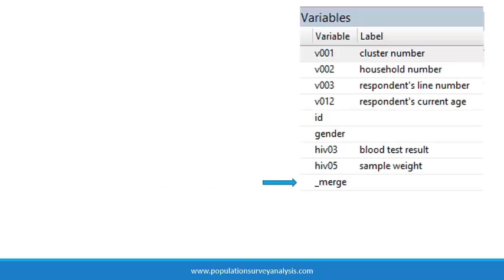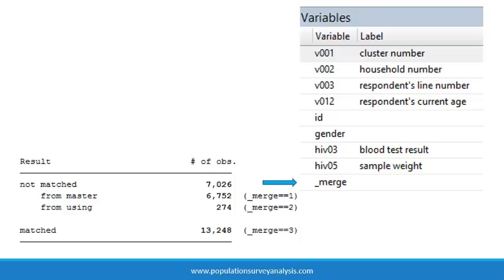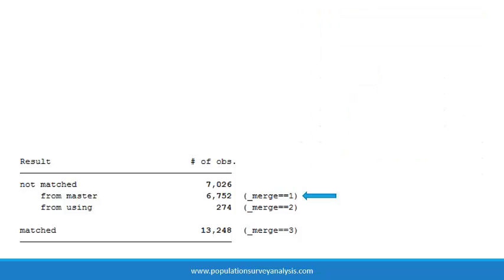When we use the merge statement, Stata automatically generates a new variable in the dataset called _merge and provides a summary of that variable in the output window. The _merge variable always has three categories: one is assigned to unmatched observations in the master dataset, two is assigned to unmatched observations in the using dataset, and three is assigned to matched observations.